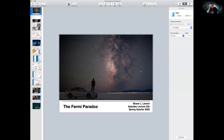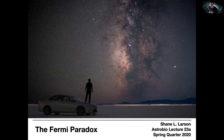The Fermi Paradox is a very famous and very old question about the propensity of life in the universe. It was formulated, expressed, and named after Enrico Fermi in the 1940s. This is certainly something that is about 80 years old at this point, and it's something we've thought quite a bit about.